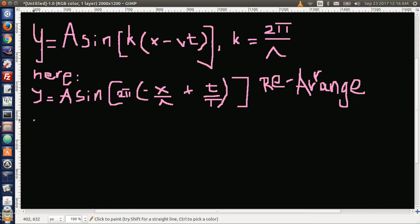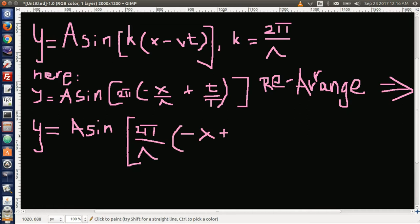So then y equals A sine, I will factor out the lambda, so we have 2π over lambda, then we have times negative x plus lambda over the period times time.